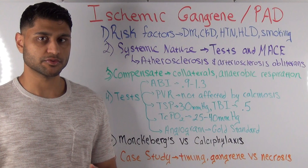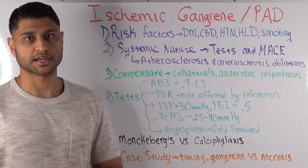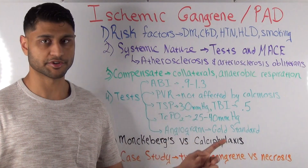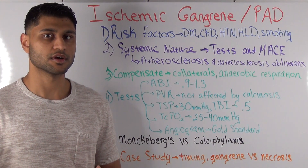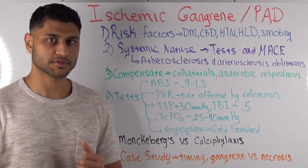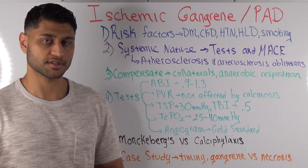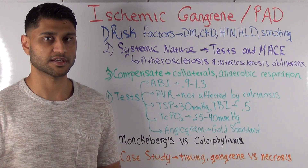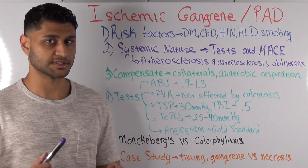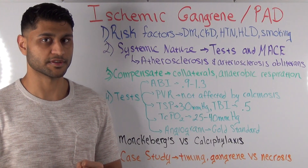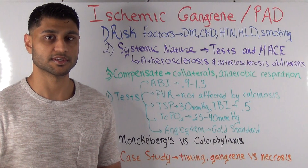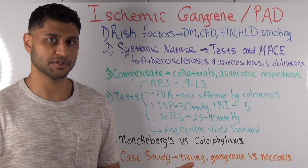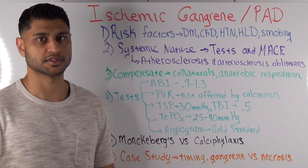Now let's go over the tests you order to evaluate for peripheral arterial disease. The first one is your ABI. You need to know the normal reference range, which is between 0.9 and 1.3. The two major limitations are: first, it does not assess for microvascular disease; and second, if you have medial wall calcinosis or calcified arteries, you could get a falsely elevated ABI such as 1.4. This falsely elevated result occurs in about one-third of patients because roughly one-third with PAD have calcified vessels due to chronic kidney disease or diabetes, which are the two main causes of Monckeberg's sclerosis.